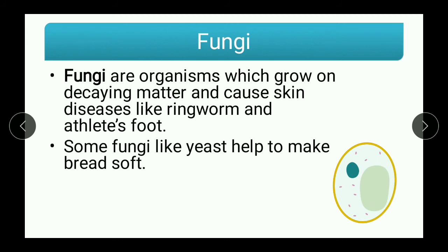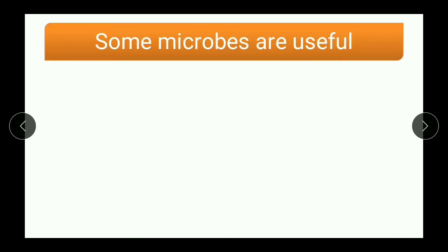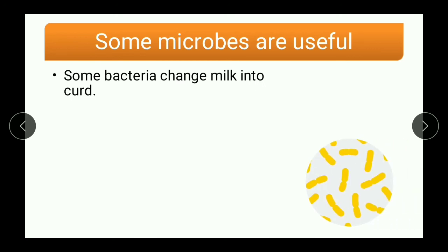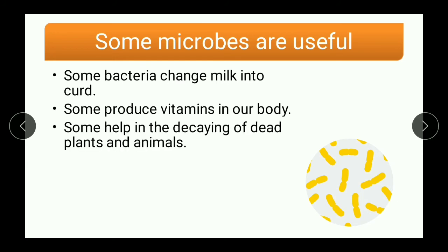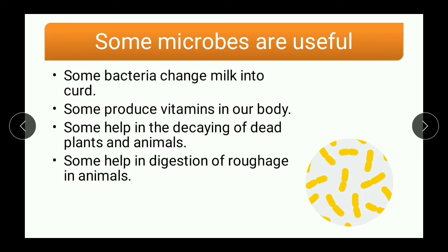Now that we know the types of microbes, let us see some uses of these microbes. Some bacteria change milk into curd while some produce vitamins in our body. Some also help in the decaying of dead plants and animals, which is very essential for balance in the ecosystem. Some help in digestion of roughage in animals. So this is how microbes are useful for us — some microbes cause diseases while others are beneficial.